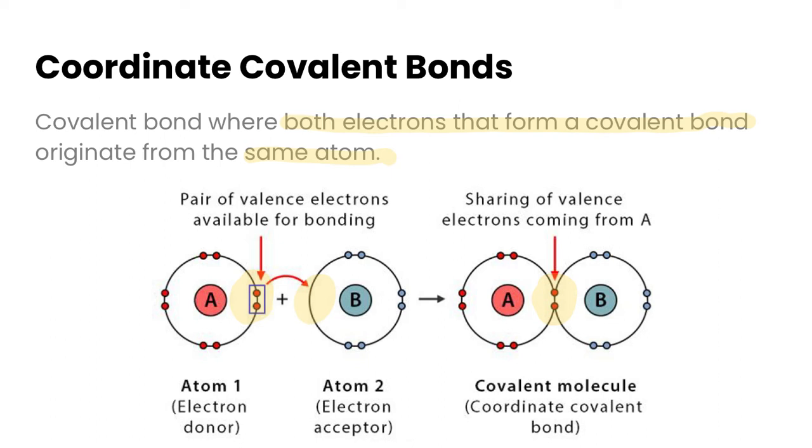Now, sometimes we have to show that these occur in our Lewis structures. So let's take a look at this example here, carbon monoxide. If we go through the steps, carbon has four valence electrons, the oxygen has six. So we should have 10 electrons in our diagram. Our carbon, since it has a lower valence number, is technically in the middle.